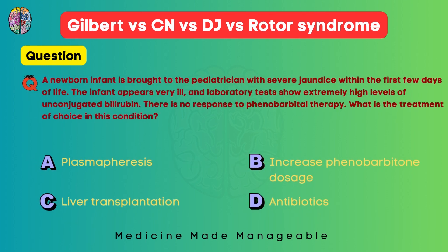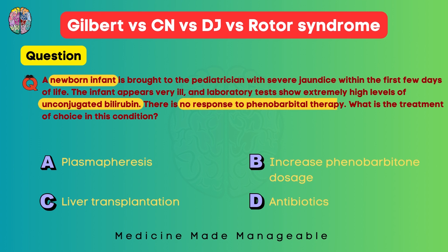A newborn infant presents with severe jaundice within the first few days of life. The infant appears very ill with extremely high unconjugated bilirubin levels, and there is no response to phenobarbitone therapy. Unconjugated bilirubin is increased, the patient is a newborn, and there is no response to phenobarbitone — this points to Crigler-Najjar syndrome type 1. The treatment of choice is liver transplantation.